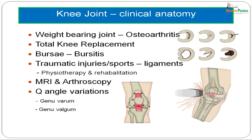The knee joint has a large number of synovial fluid-filled sacs called bursae all around the joint to facilitate movement of the ligaments and tendons. Inflammation of these bursae causes bursitis, which results in severe restriction of joint movements. The knee joint is intrinsically an unstable joint and it is supported by a large number of ligaments which are both intrinsic and extrinsic. Violent injuries sustained during sports and motor vehicle accidents cause destruction of these ligaments, and repair involves substantial physiotherapy and rehabilitation.